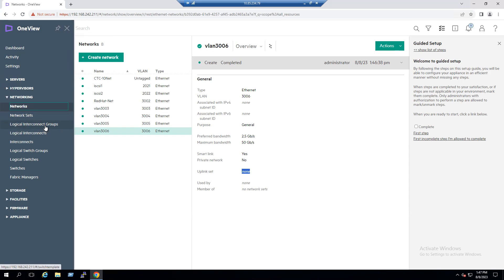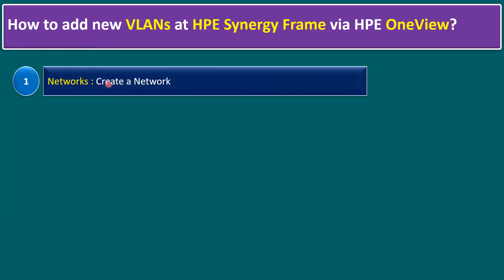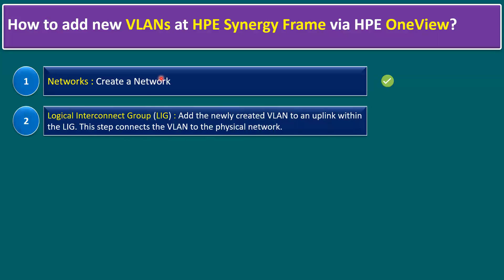Let me show the steps from the slide as well. Step one was to create the network for the new VLAN 3006 under Networking — that is completed. Now step two is performed under the Logical Interconnect Group, abbreviated as LIG. We need to add the newly created VLAN 3006 to an uplink within the LIG. The importance of this step is that it connects the VLAN to the physical network.